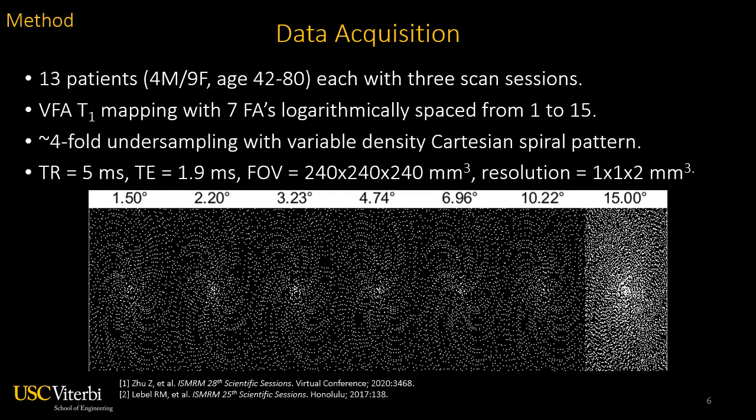Details of the data used in this study are shown here. The data includes 13 patients with high-grade glioma, each with 3 scan sessions. A VFA T1 mapping approach was used with 7 flip angles logarithmically spaced from 1 to 15 degrees. To avoid long scan times on patients, data were undersampled by roughly four-fold with a variable density Cartesian spiral pattern. TR and TE were 5 and 1.9 milliseconds respectively, and field of view and resolution were 240×240×240 mm and 1×1×2 mm cubic respectively.